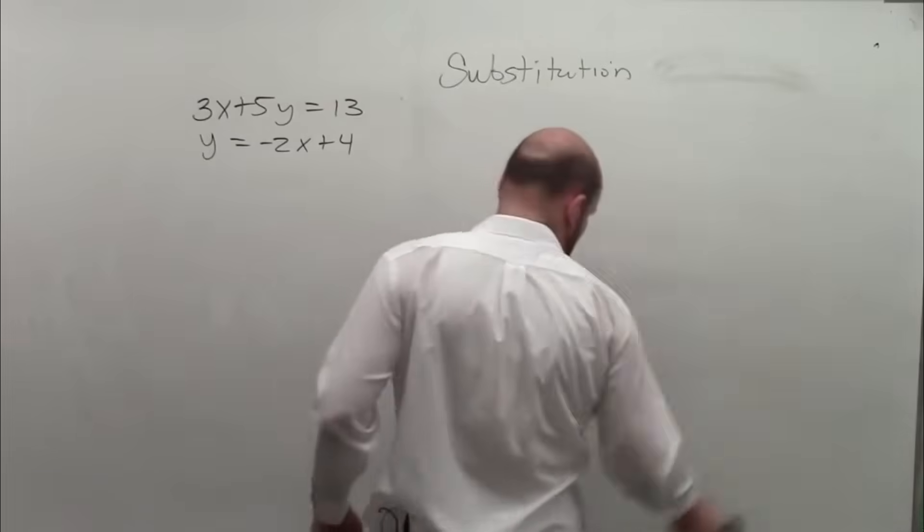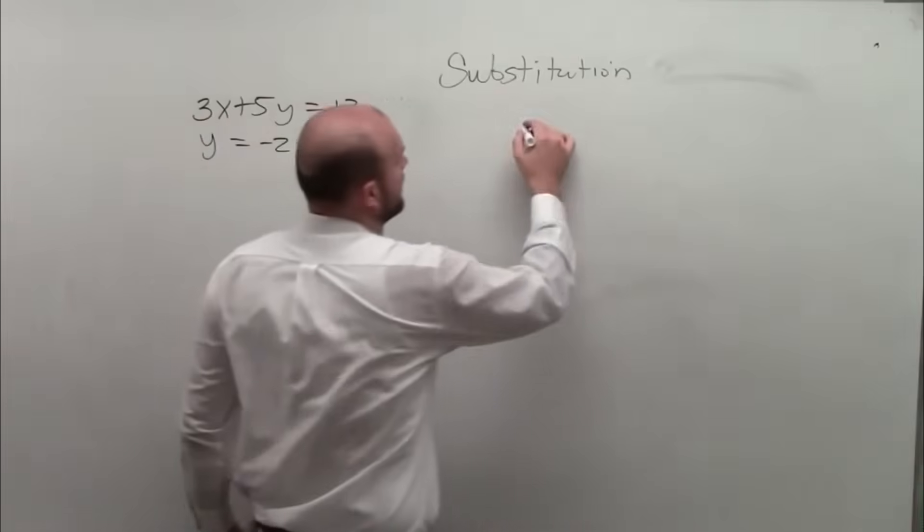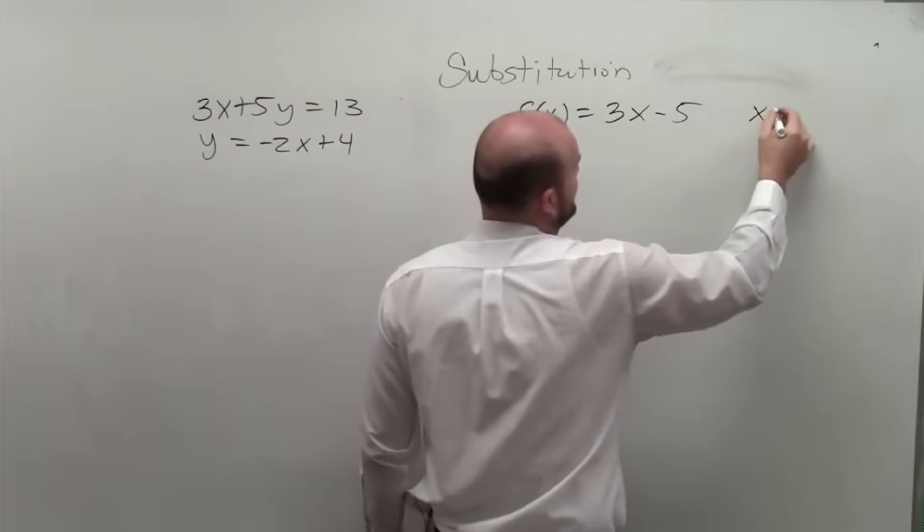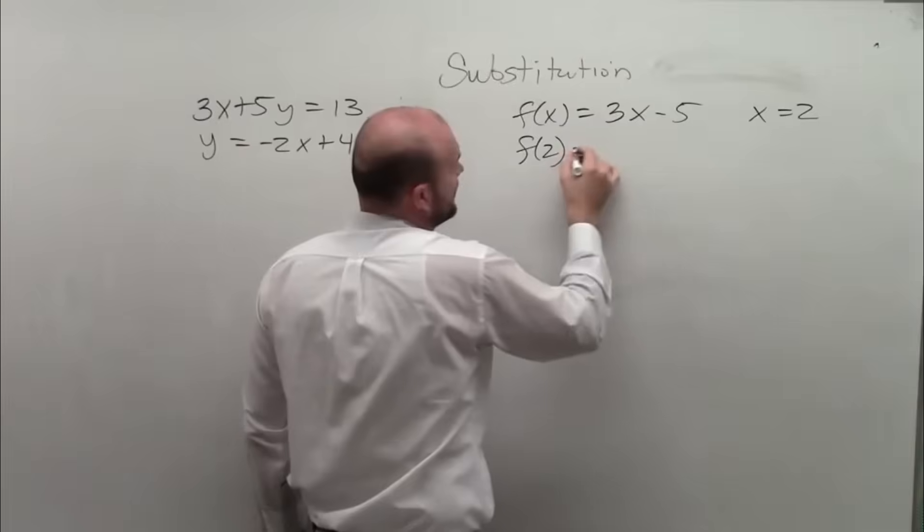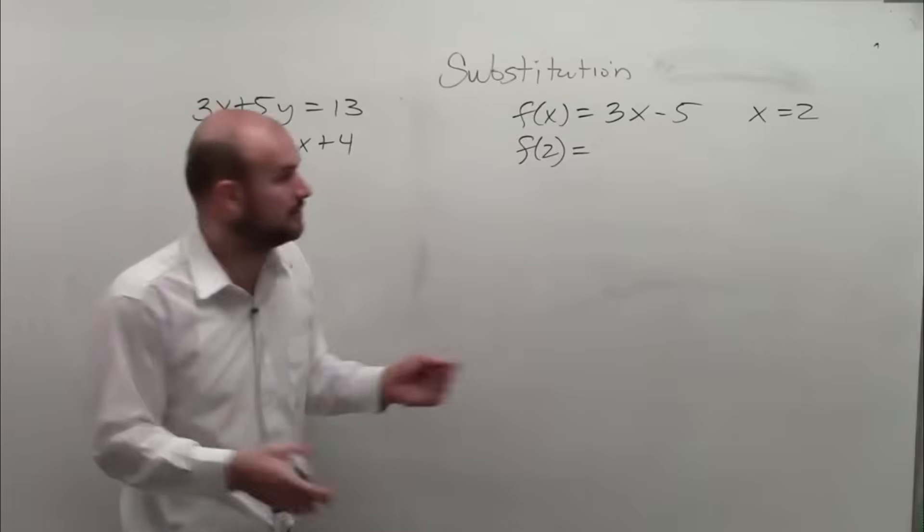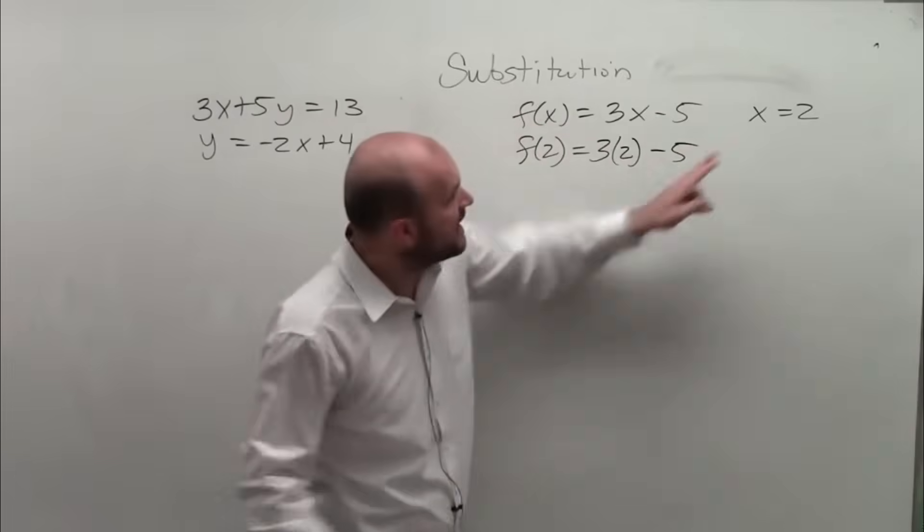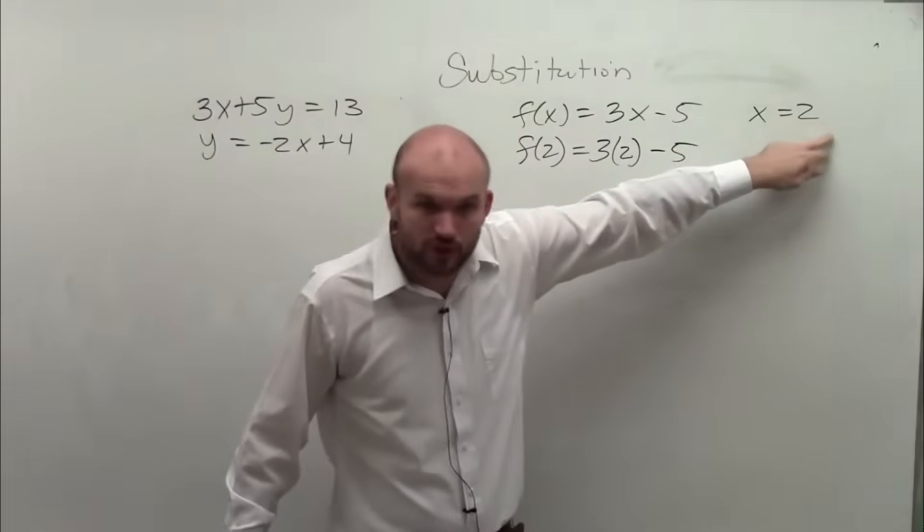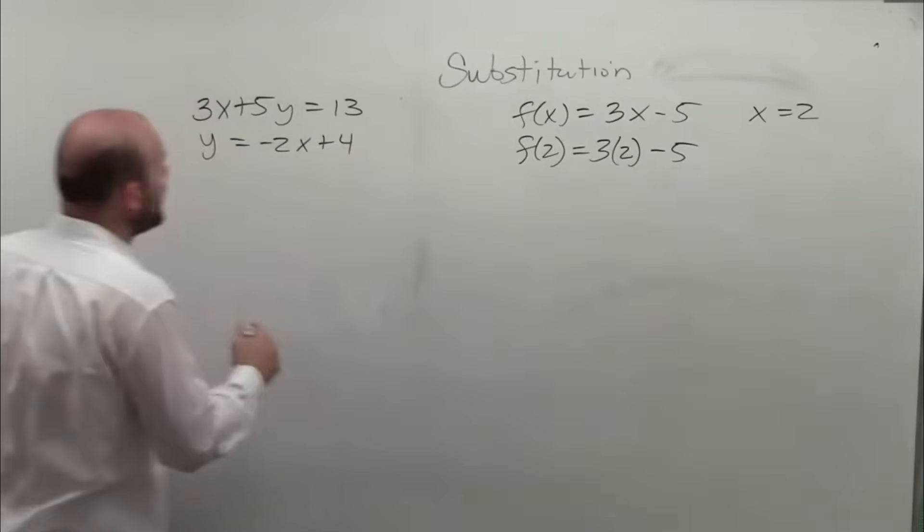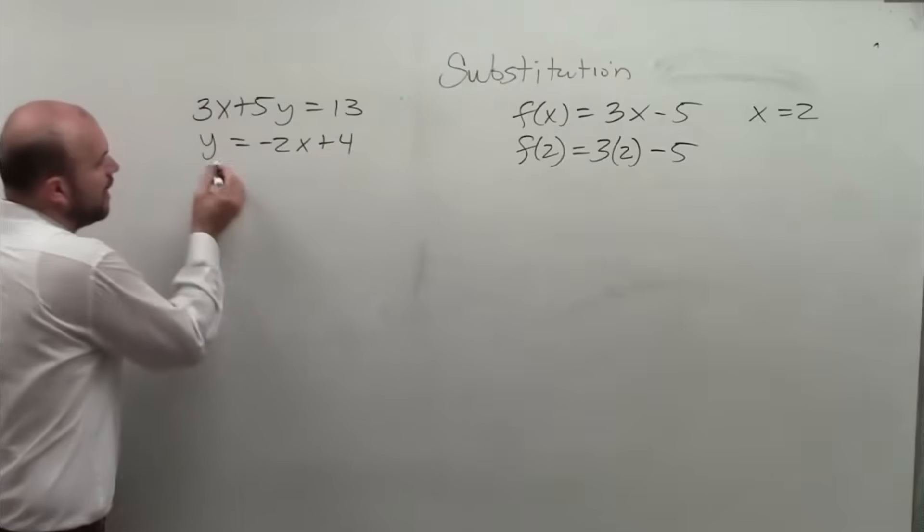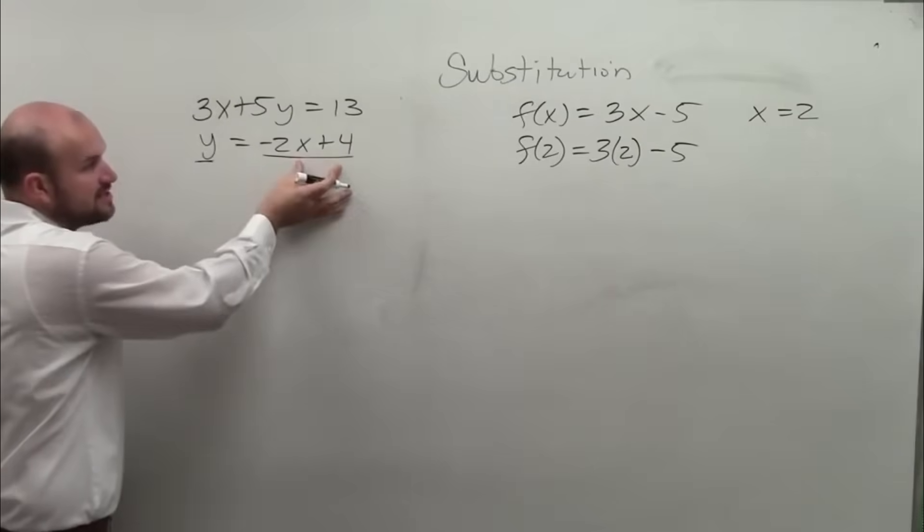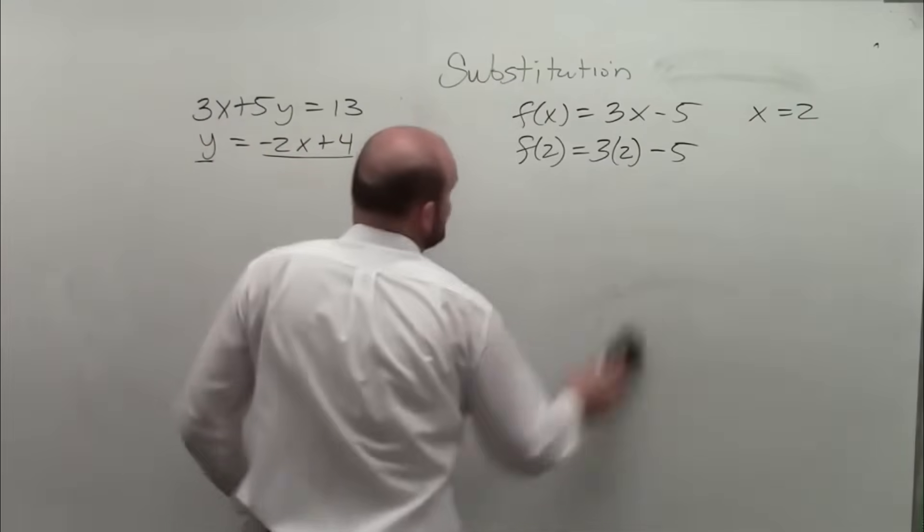Basically when we're doing substitution, we want to be able to have it written with a variable isolated. You can do this when it's not equal to 1, but then you'd have to undo multiplication or division. So it's easiest when you have a variable that has a coefficient of 1. Now, if you remember when we did functions, if I had f of x equals 3x minus 5, and I say find when x equals 2, or I said f of 2, what else did we do with the 2? You put it in for the x. So you did 3 times 2 minus 5, because x was equal to 2. 2 was equal to x. You could replace them or substitute one for the other. Now we're doing something very similar. y is not equal to a number, but it's equal to an expression. But we can still substitute in that expression in for the variable.